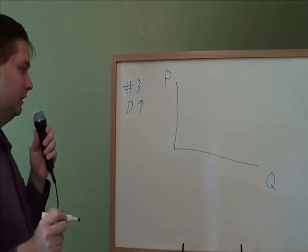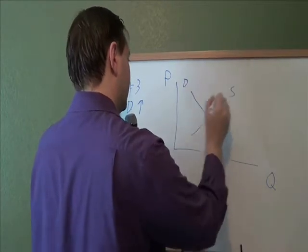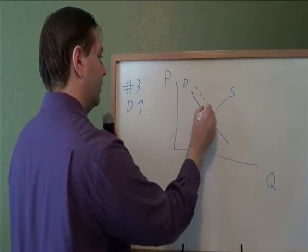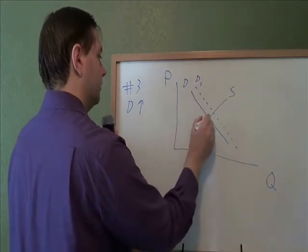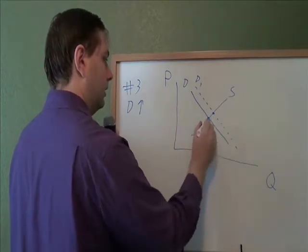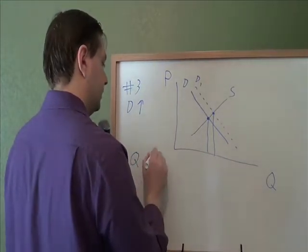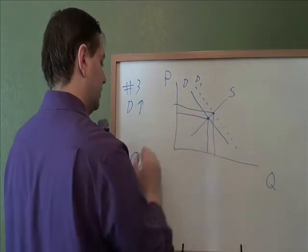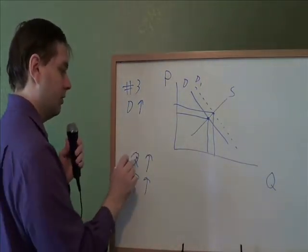Problem three: what happens when demand increases? The graph always starts with the standard shape. If demand increases, that means it moves to the right — instead of the original demand line, we get a new demand line, D1. So the equilibrium moves from here to there, the quantity went up. The price also moved up, so that is an increase. When demand goes up, you have an increase in both quantity and price.